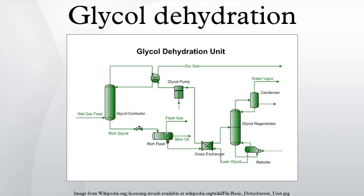After leaving the flash vessel, the rich glycol is heated in a cross exchanger and fed to the stripper. The glycol stripper consists of a column, an overhead condenser, and a reboiler. The glycol is thermally regenerated to remove excess water and regain the high glycol purity. The hot, lean glycol is cooled by cross exchange with rich glycol entering the stripper, and is then fed to a lean pump where its pressure is elevated to that of the glycol absorber.